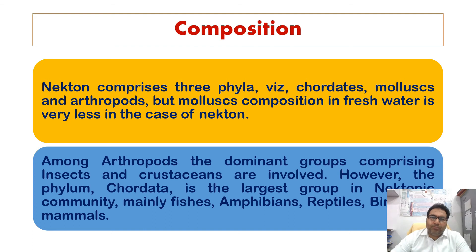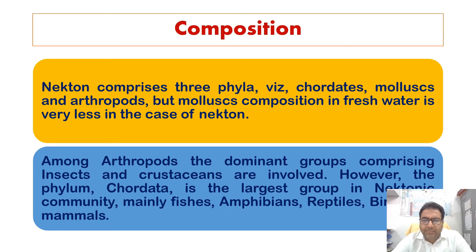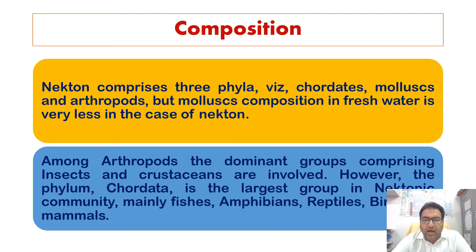In general, nekton comprises three phyla: Caudata, Mollusca, and Arthropoda. Mollusca composition in freshwater is very low compared to the marine environment. Among Arthropods, the dominant group comprises insects and crustaceans. The phylum Caudata is the largest group of the nektonic community, mainly including fishes, amphibians, reptiles, birds, and mammals.